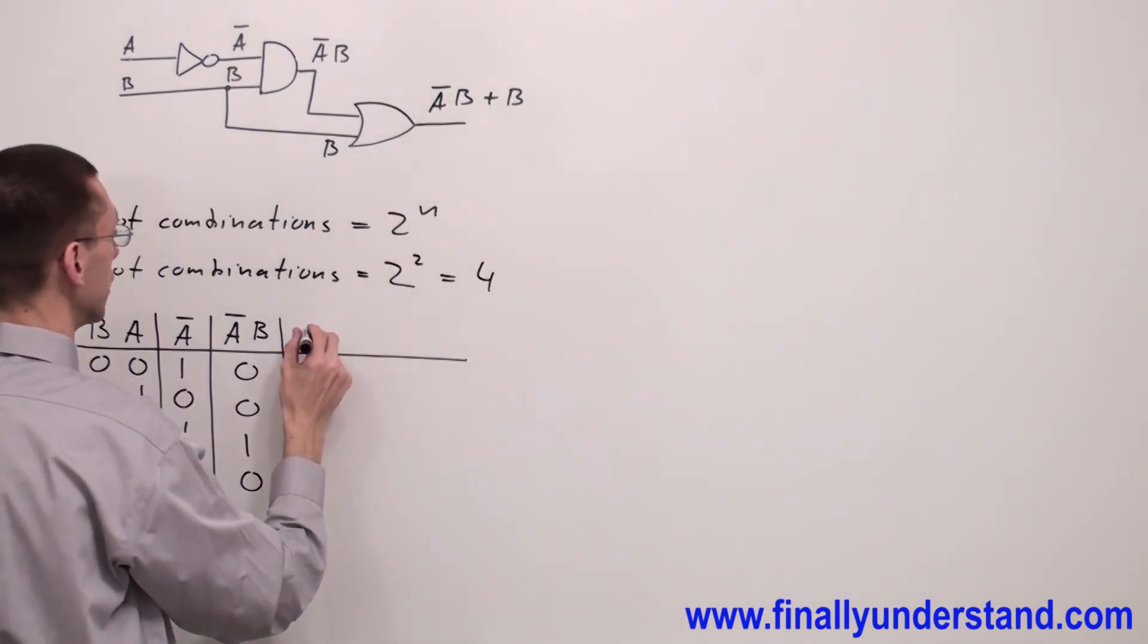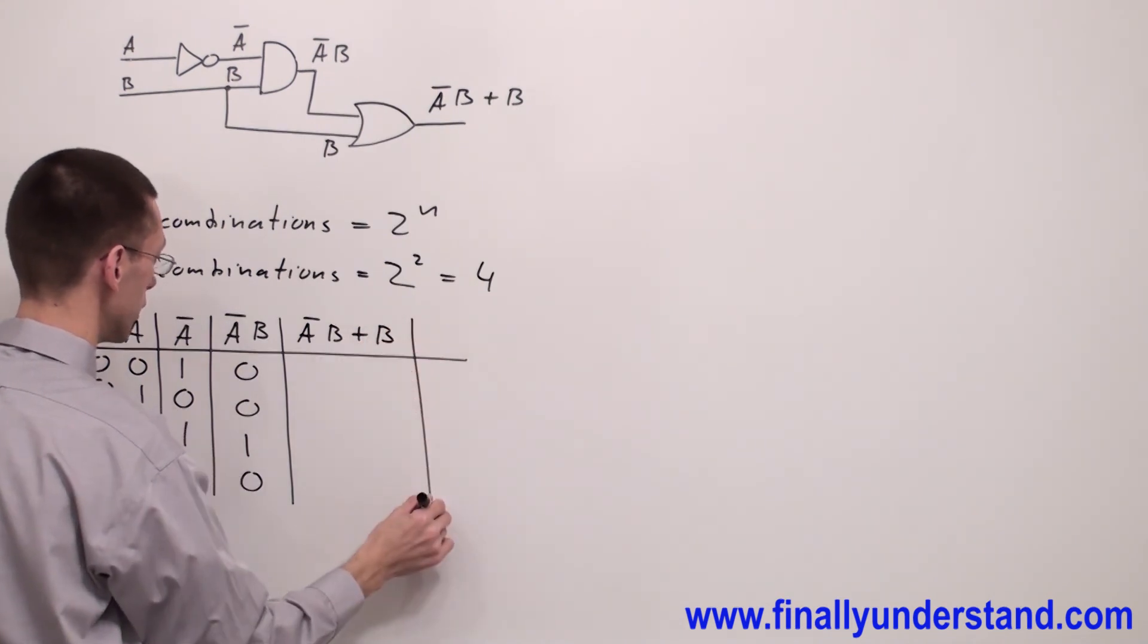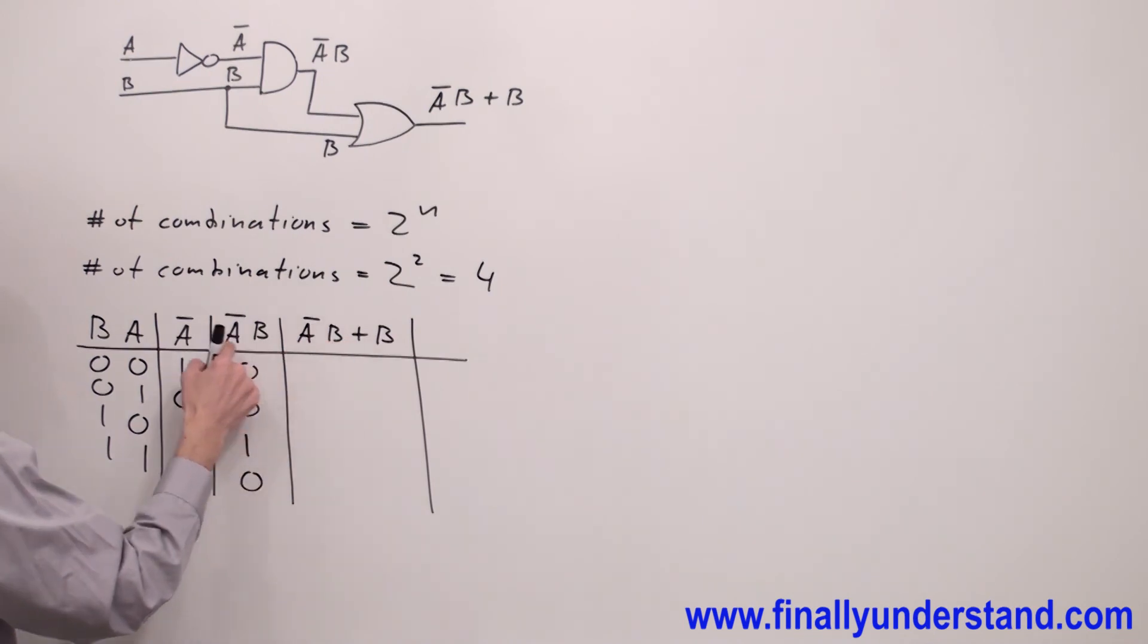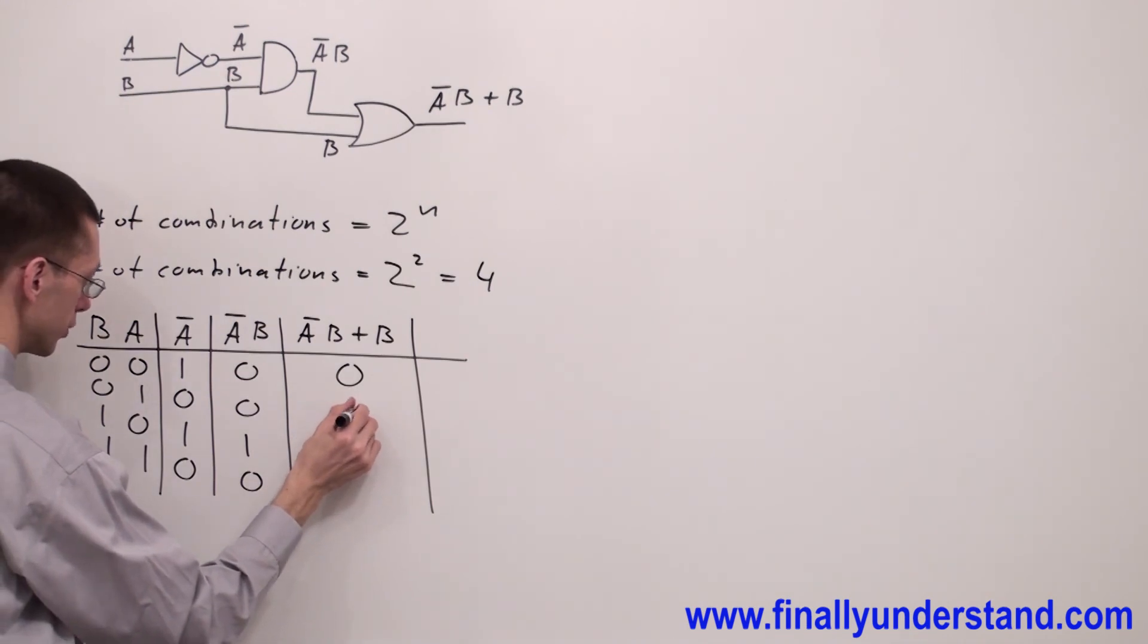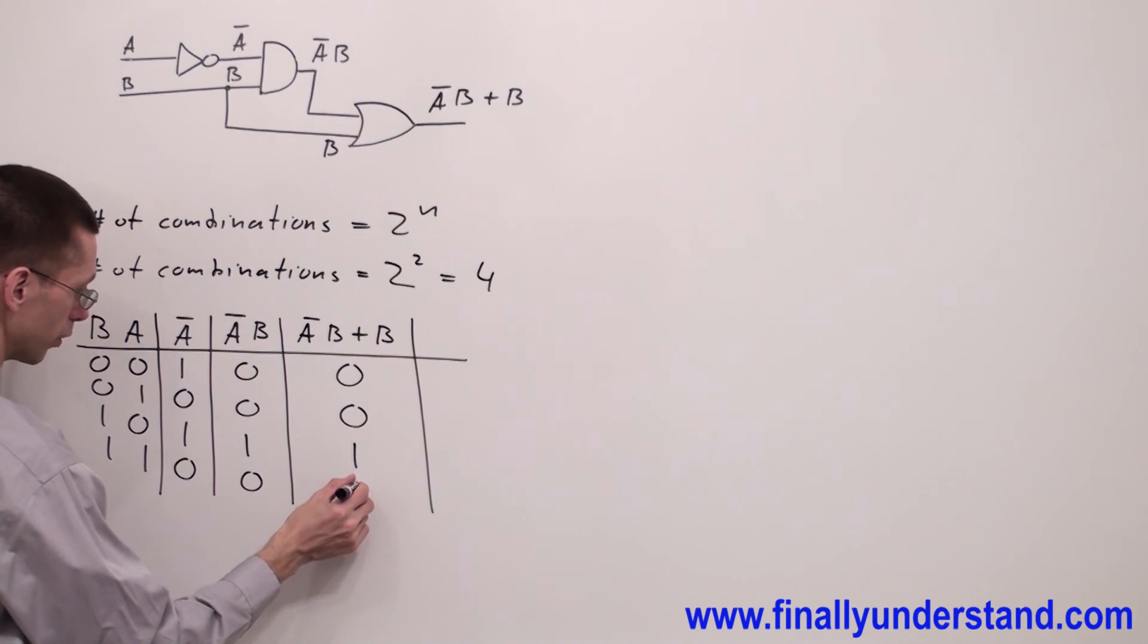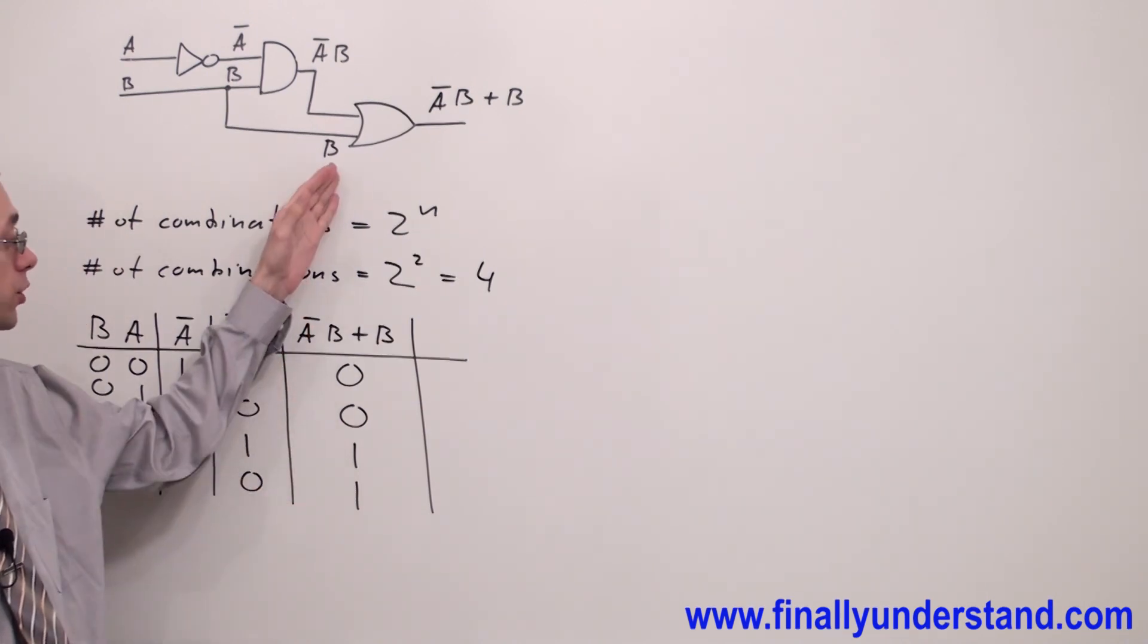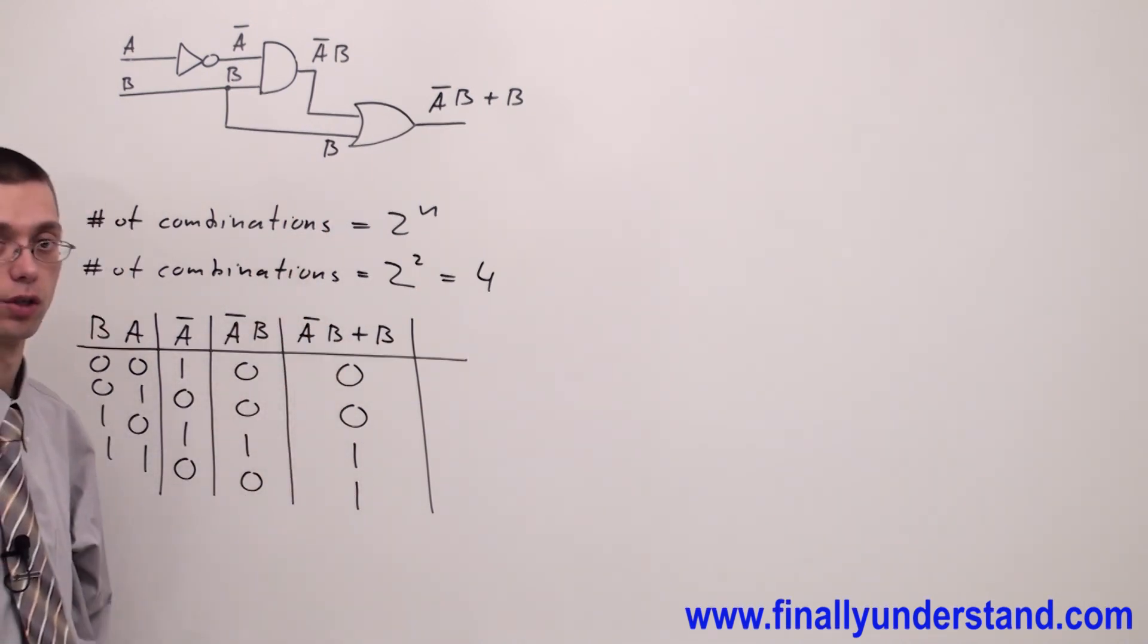Next, we're supposed to make the column labeled A'·B + B. We have to OR this column A'·B with B. 0 OR 0 gives me 0. 0 OR 0 gives me 0. 1 OR 1 gives me 1. 0 OR 1 gives me 1. These are all possible output conditions for this circuit. And this column is the answer to my problem.